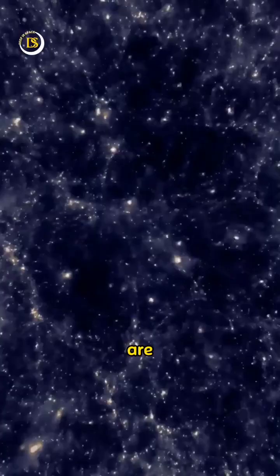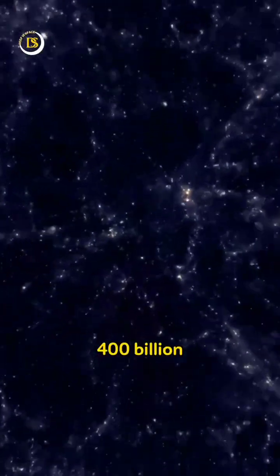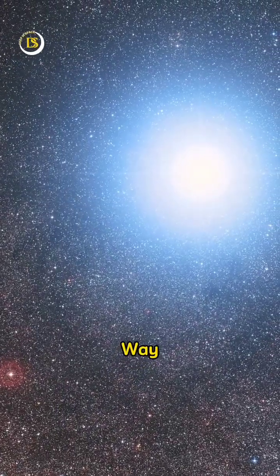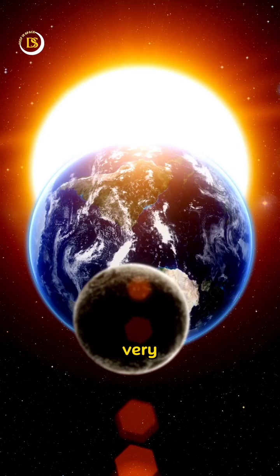Scientists estimate that there are somewhere between 100 to 400 billion stars in the Milky Way, along with countless planets like our very own Earth.